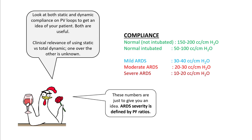Normal compliance in an unintubated patient is around 150 to 200 cc per centimeter of water. However, when you intubate a normal person, the compliance drops to 50 to 100 because of the positive pressure ventilation rather than negative pressure ventilation. As the severity of ARDS increases, your compliance worsens, and in very severe ARDS you will be seeing compliance like 10 to 20 cc per centimeter of water or even lower. However, understand that ARDS severity is defined by the PF ratio and not by the compliance — this is just to give you some idea about how poorly compliant lungs can be.